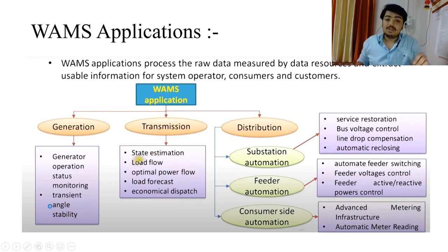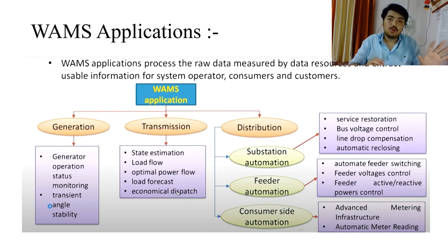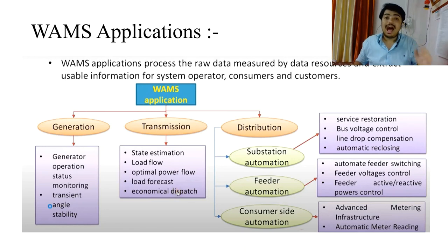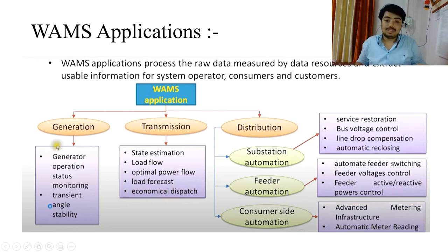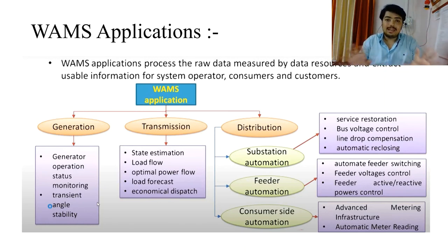The second application area is transmission. WAMS can be used for state estimation, load flow, optimal power flow, load forecast, and economical load dispatch — for example, if you have a 200 MW and a 600 MW generator, it is generally more efficient to run the 200 MW at full capacity rather than the 600 MW at partial load, as the 200 MW gives higher efficiency and lower cost per generation. Using WAMS, depending on the load demand, you can connect the most appropriate generator to the grid, effectively optimizing the supply-demand equation.